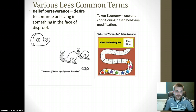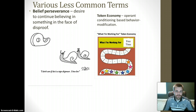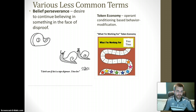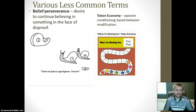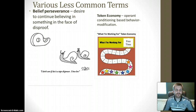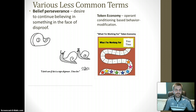Two other terms are belief perseverance and token economy. Belief perseverance is when you have a desire to continue believing in something even when it has been disproven to you. Once you have been shown evidence as disproof, you may actually become more stubborn or more tenaciously try to defend your beliefs. With the token economy, it is a type of behavior modification based on operant conditioning designed to encourage behavior. Used with young children, senior citizens, and people with social anxiety, participants receive a token as a reward for behavior, then exchange it at the end of sessions for something they are working toward.